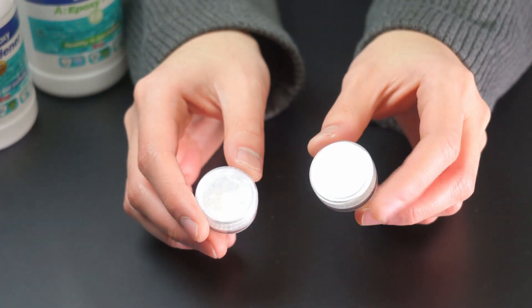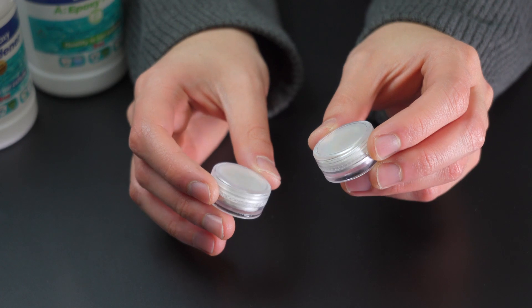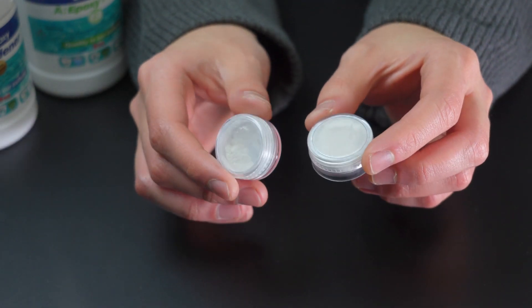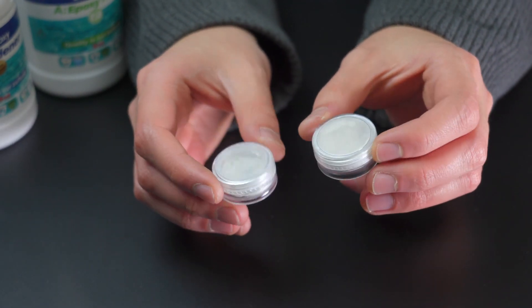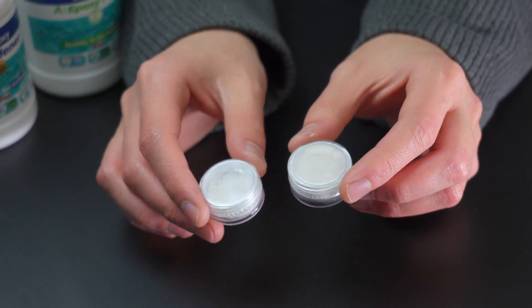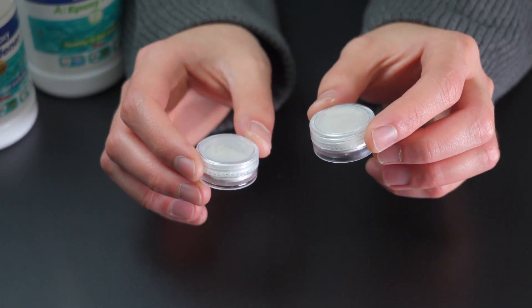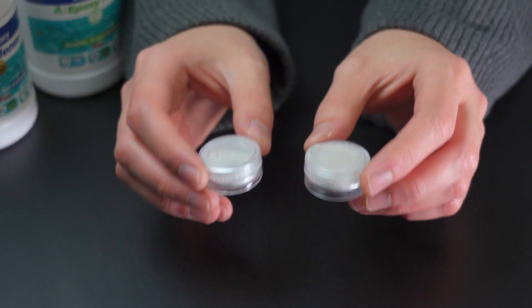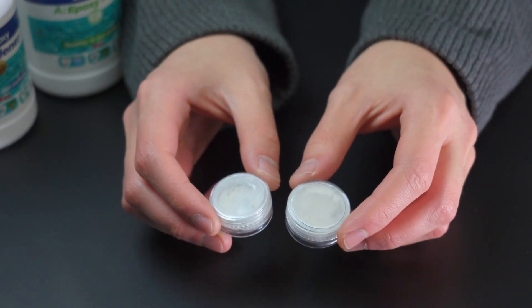Alright, so the next ingredient on our list is mica powder. This is for the whites of our eyes, so we have white and silverish mica powder. I've tried other colors before thinking that they'd be cool, but honestly any color other than white makes you look like you have some kind of disease. So we're sticking with white.